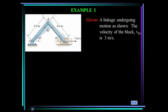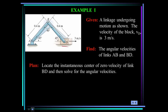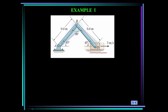This linkage undergoes the motion as shown. The velocity of block D is known to be 3 meters per second. Find the angular velocities of links AB and BD. Our plan is to locate the instantaneous center of zero velocity of link BD and then solve for the angular velocities. Since block D is moving to the right at 3 meters per second, the angular velocity of link AB is going to be clockwise. The instantaneous center of velocity for link BD is located at the intersection of line segments drawn perpendicular to v_B and v_D, so the IC is located along an extension of link AB.